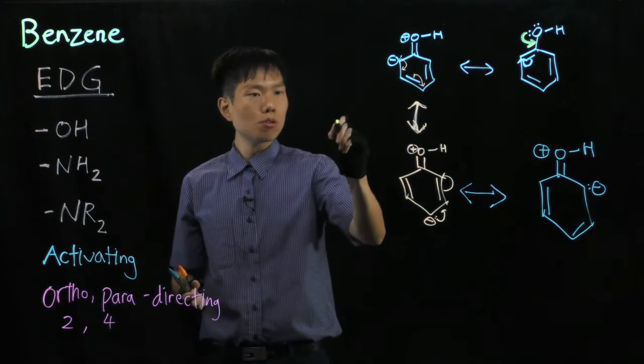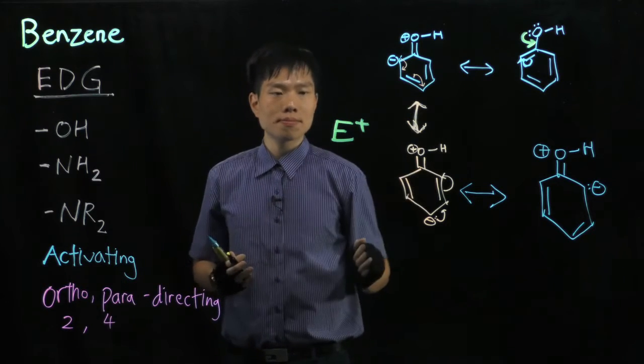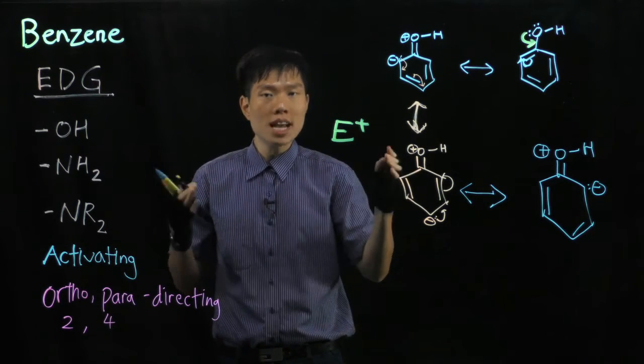the ortho position and the para positions are relatively having more electron density than the meta position. And we know that, if I'm going to push another electrophile to a phenol, electrophile wants electron.